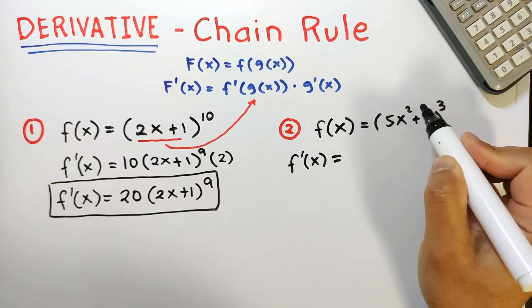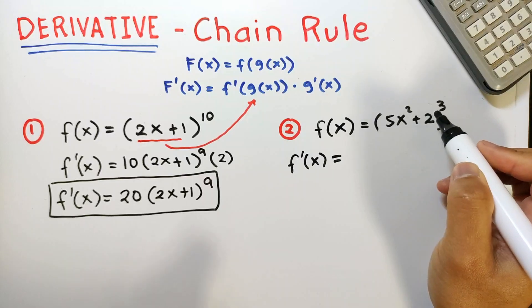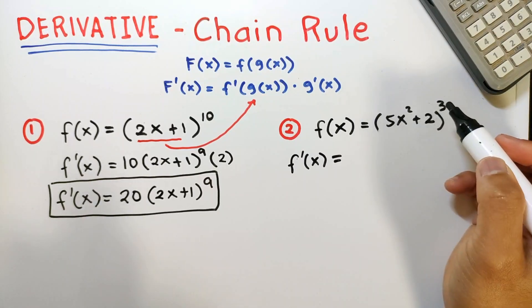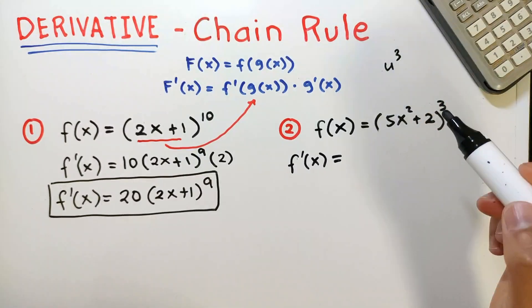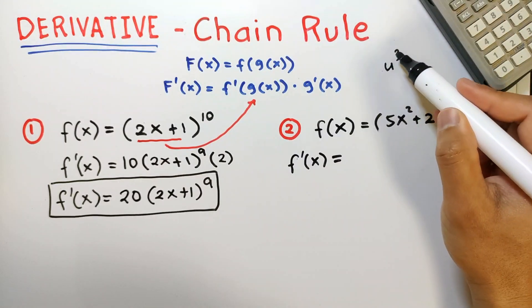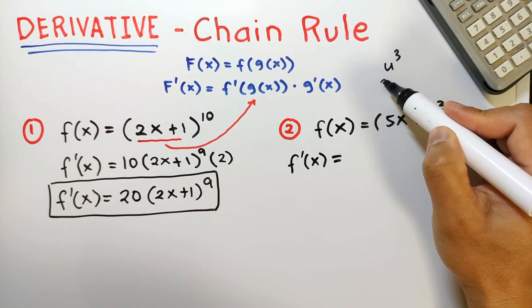Now we have 5x squared plus 2 cubed. So that's a variable raised to 3. So let's assume that's u, u raised to 3. Now again, apply the power rule in differentiating this. So that's 3u squared.